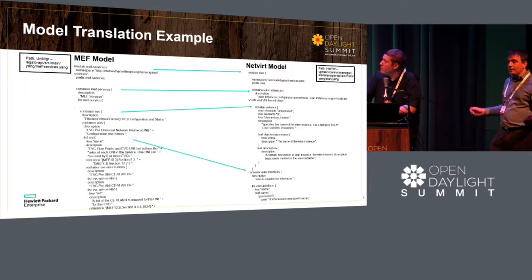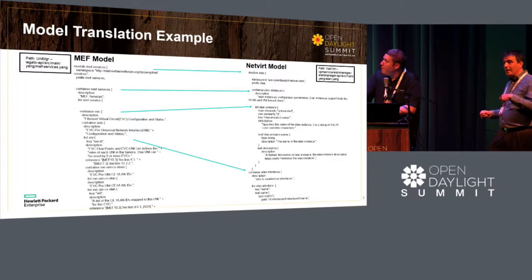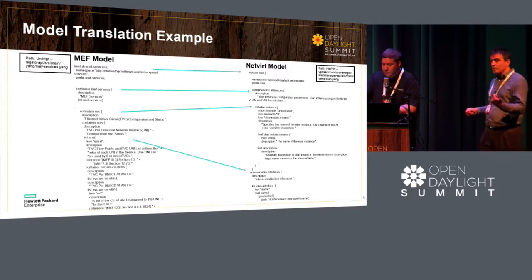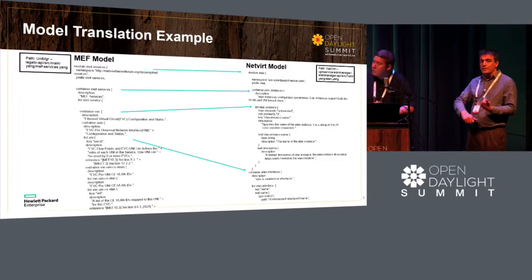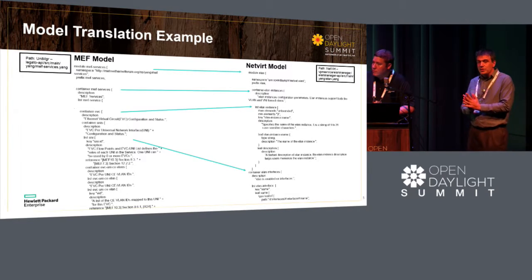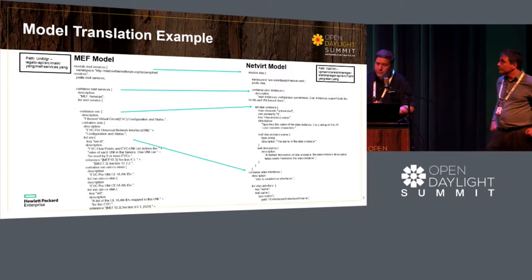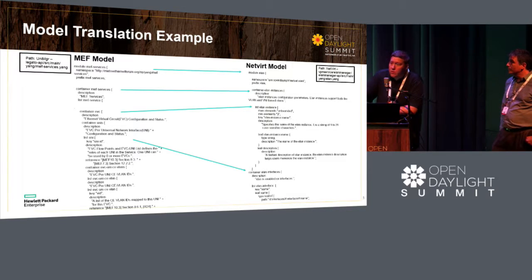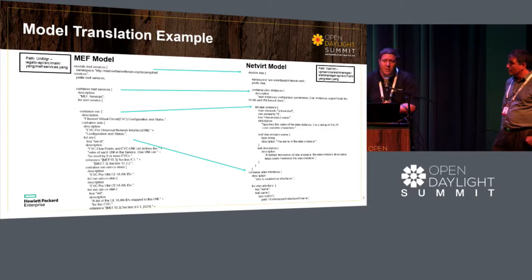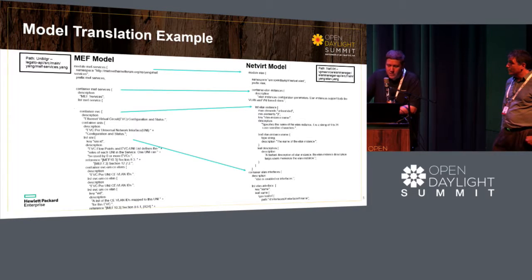In parallel, it's exposed to OpenStack but also to a northbound application, and by federation you can connect the two. Instead of implementing all network capabilities ourselves, we just have a thin application that translates the API we want to export — in our case, the MEF API — into NetVirt's API, which then creates all the networking.